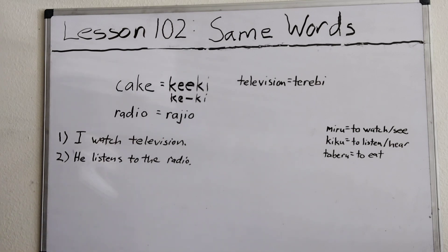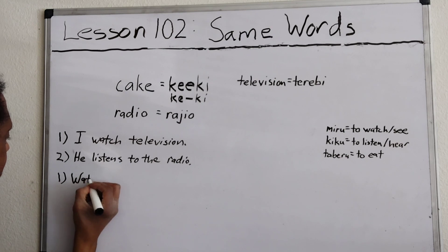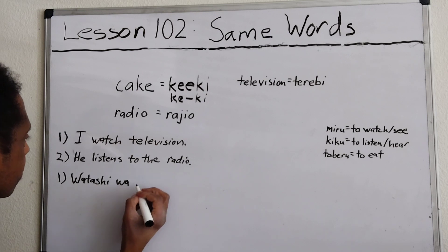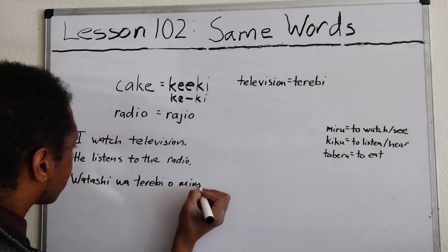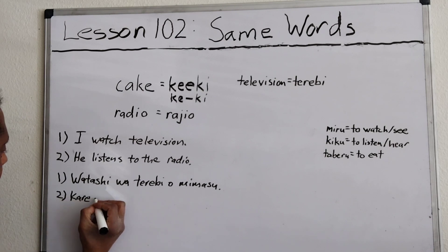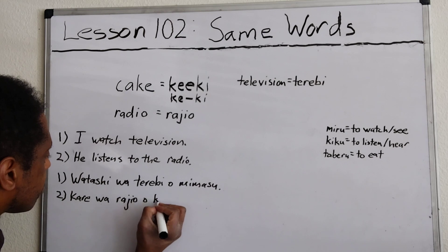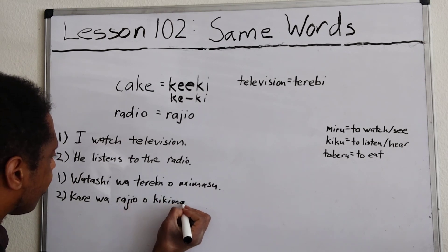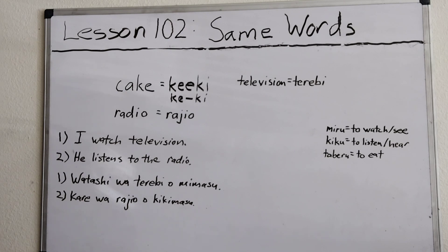Go ahead and translate: 'I watch television and he listens to the radio.' The answer uses 'terebi' and 'rajio' as direct objects with the appropriate verbs. So that's it for this lesson — I'll see you next lesson.